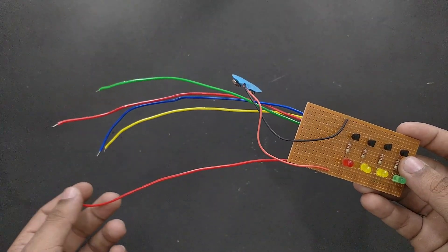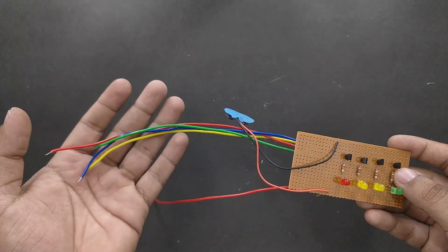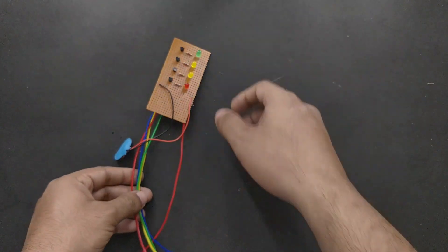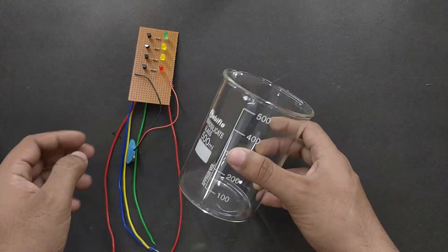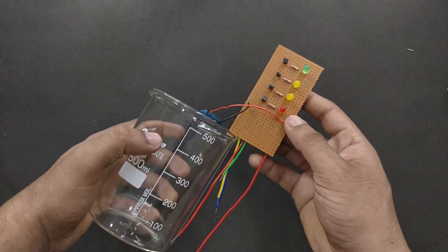These wires should be cut with respect to the length of the water container and the respective levels that need to be indicated. Here I am using this glass beaker for demonstration, so I'll be cutting the wires with respect to different levels on this beaker.